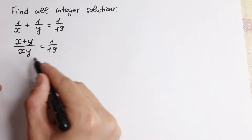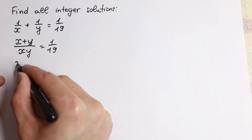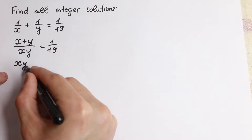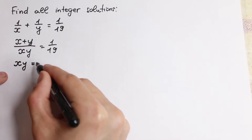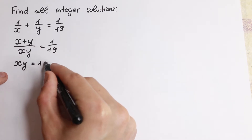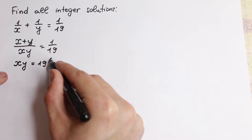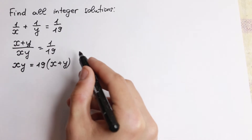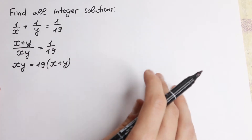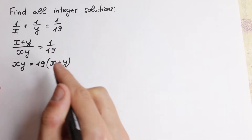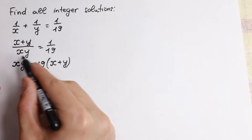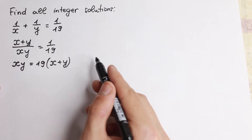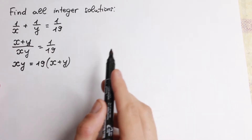So if we cross-multiply, we will have xy equal to 19 times (x plus y). We just cross-multiply our denominator from left to right. What are we going to do next?